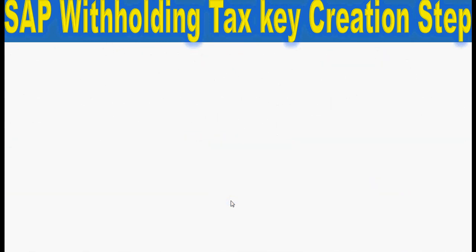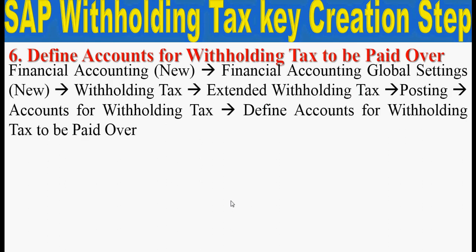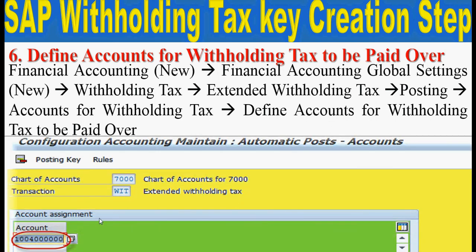The sixth step is to define accounts for withholding tax to be paid over. Go through this path: Financial Accounting New > Financial Accounting Global Settings New > Withholding Tax > Extended Withholding Tax > Posting > Accounts for Withholding Tax > Define Accounts for Withholding Tax to be Paid Over. Click on new entries, enter your chart of accounts, then the Transaction WIT (Extended Withholding Tax), and assign your GL account for withholding tax.